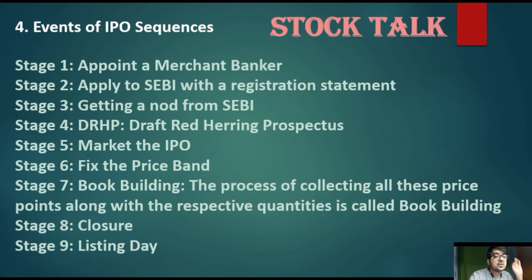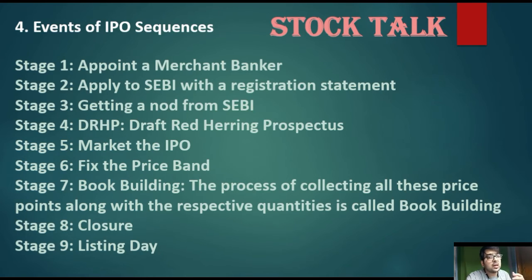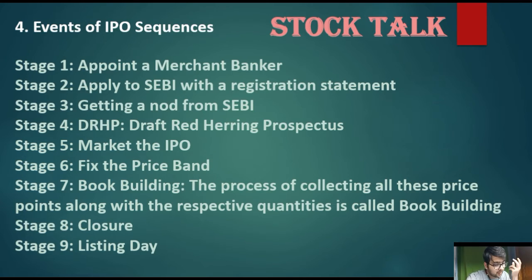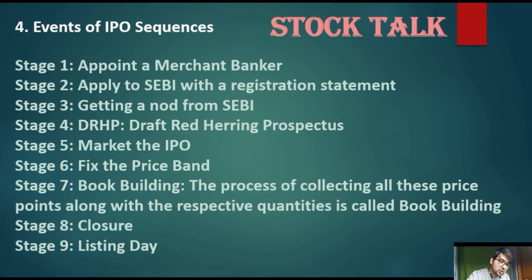The DRHP — Draft Red Herring Prospectus — is a complete document about the company that is submitted before the IPO. Once the DRHP is approved, the IPO opens for subscription, and investors can apply. After that comes the book building process — this is the process of collecting bids at various price points within the price band. Once the IPO closes after the book building process, the final price is determined and then comes the listing day.